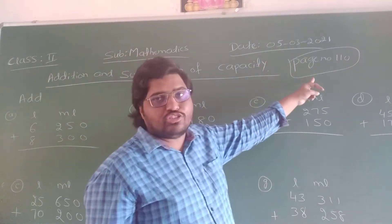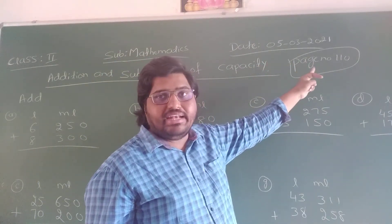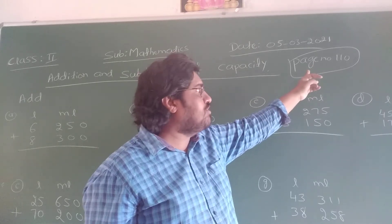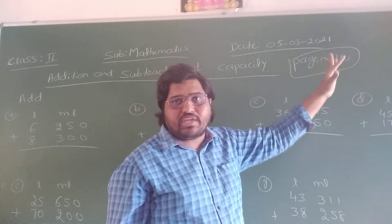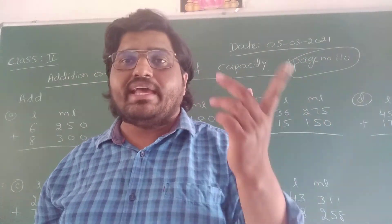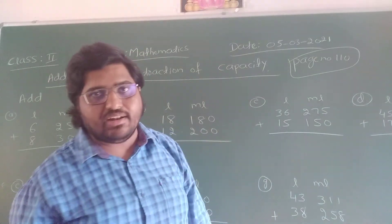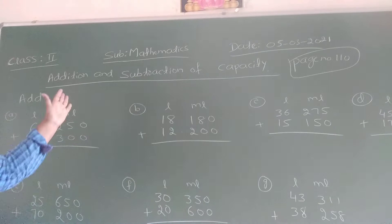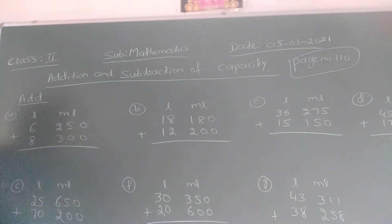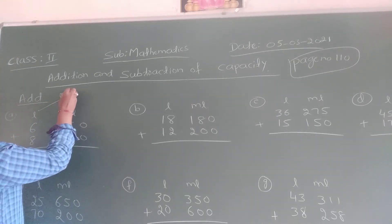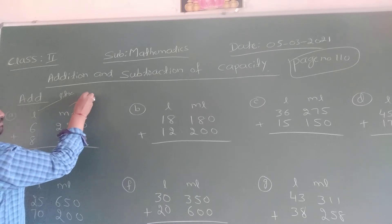It is there in your textbook page number 110. So children all you have to open the textbook page number 110. Okay it is a very simple topic today. Only addition, normally how you are adding. Same concept is there for adding in terms of capacity. Now the first sum is here and L indicate liter, and mL indicate milliliter.